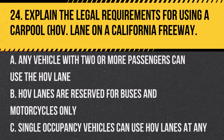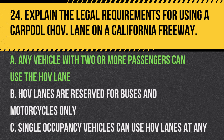Question 24. Explain the legal requirements for using a carpool lane on a California freeway. A. Any vehicle with two or more passengers can use the HOV lane. B. HOV lanes are reserved for buses and motorcycles only. C. Single occupancy vehicles can use HOV lanes at any time. Answer: A. Any vehicle with two or more passengers can use the HOV lane. HOV lanes are designed to encourage carpooling.